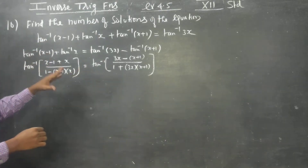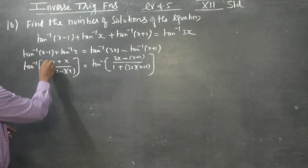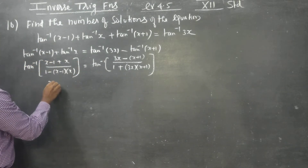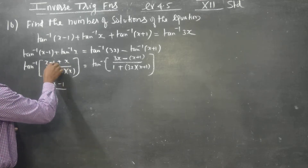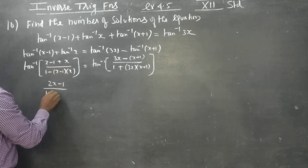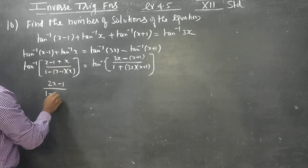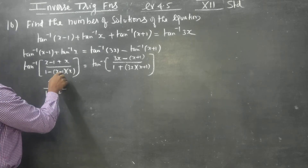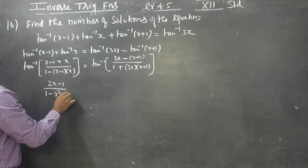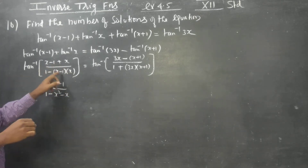Equating both sides and simplifying: the left-hand side numerator becomes 2x minus 1, and the denominator is 1 minus (x squared minus x), which gives 1 minus x squared plus x.